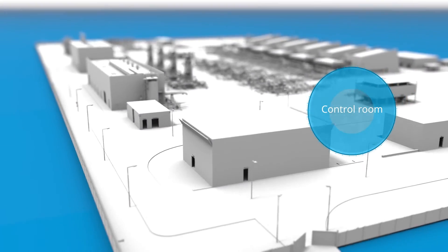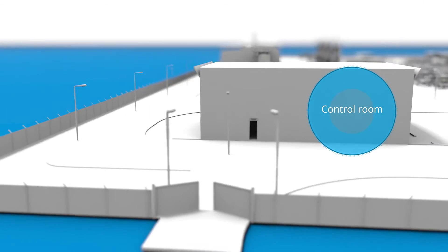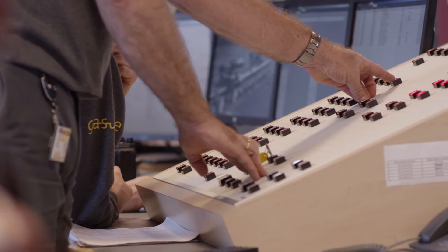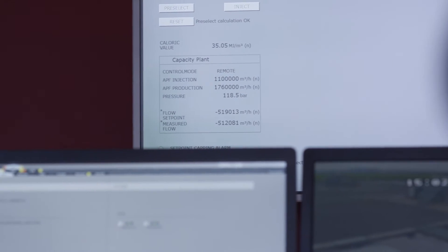The installation has a control room where these processes can be monitored and operated. However, this control room is generally only used during maintenance.